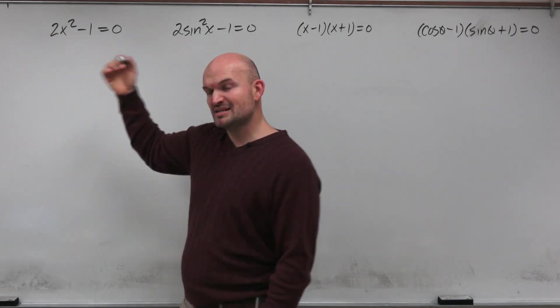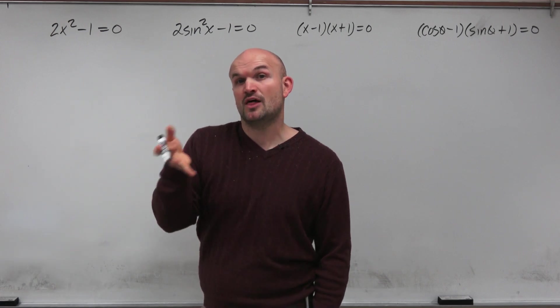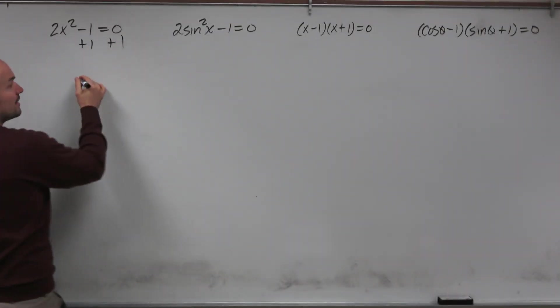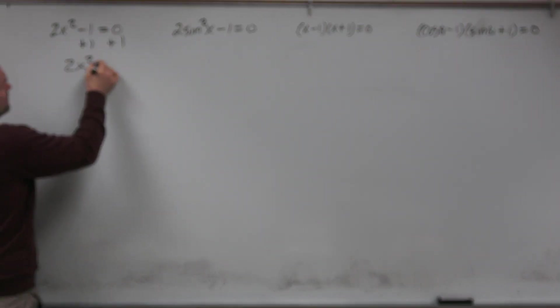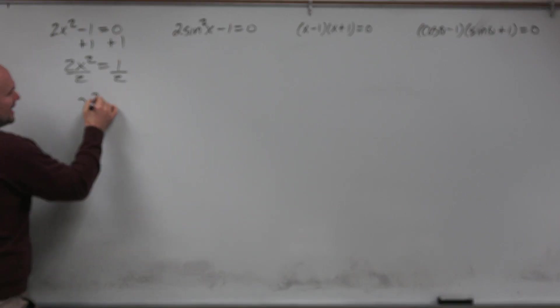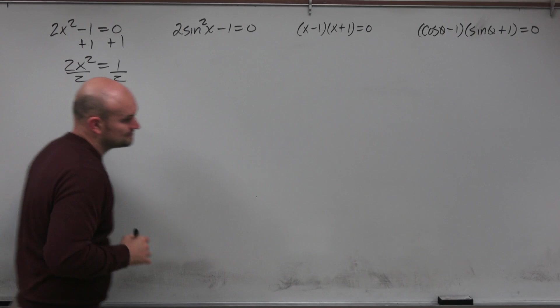Now, it's a variable squared, right? But we're just going to apply our inverse operations using the reverse order of operations. So first thing you'll want to do is add a 1, right? And then you have 2x squared equals 1. Then we're going to undo multiplication by dividing by 2 on both sides. And you get an x squared equals 1 half.